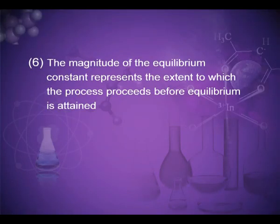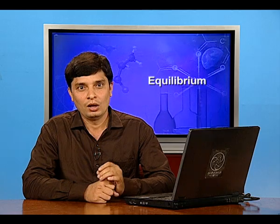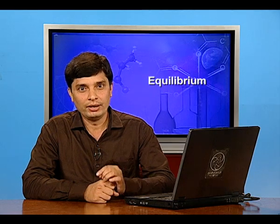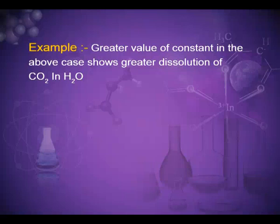Sixth point: the magnitude of the equilibrium constant represents the extent to which the process proceeds before equilibrium is attained. For example, a greater value of the constant shows greater dissolution of carbon dioxide in water.